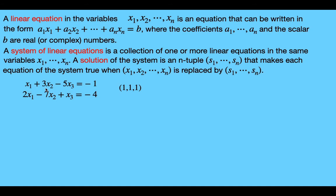We get 1 plus 3 minus 5, which equals negative 1, so it's a solution of the first equation. For the second equation, if we plug in 1, 1, and 1, we get 2 minus 7 plus 1, which is equal to negative 4, so it satisfies the second equation.